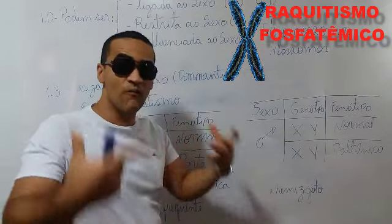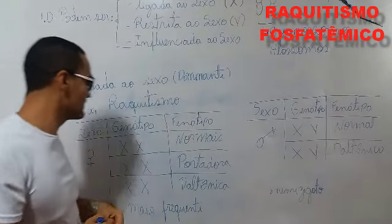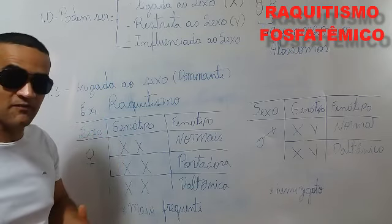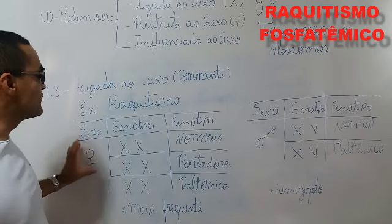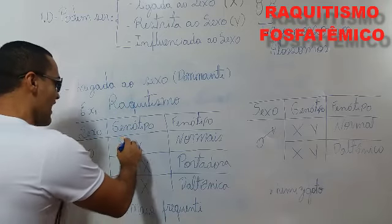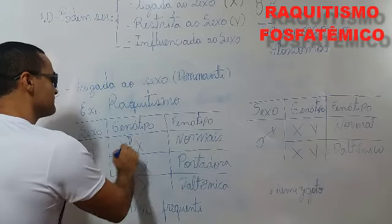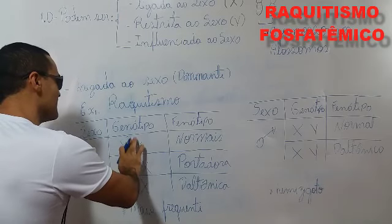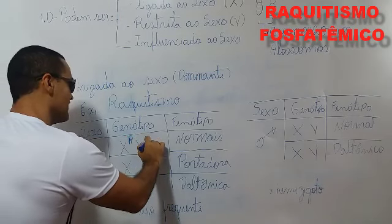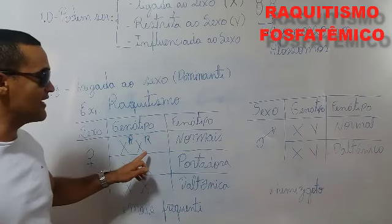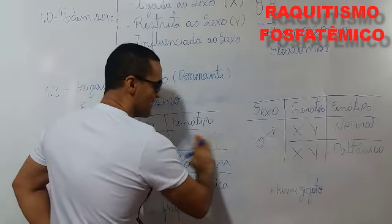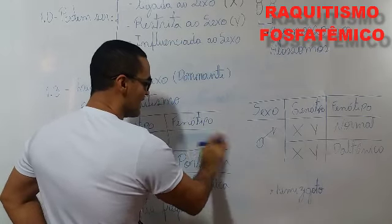Nessa região não homóloga do cromossomo X nós teremos o raquitismo fosfatêmico. Então, no sexo feminino, o raquitismo sendo dominante, a mulher X com alelo dominante R e X com alelo recessivo r — ela será raquítica.